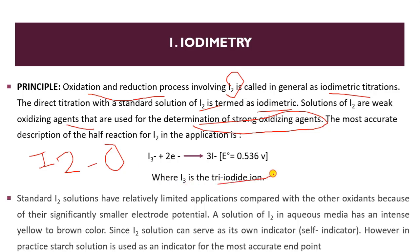The triiodide ion I₃⁻, upon gaining two electrons, gives three I⁻ ions. So iodine acts as an oxidizing agent — it reduces itself and oxidizes others. This is the fundamental redox behavior of iodine in iodimetric titration.